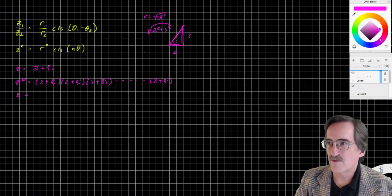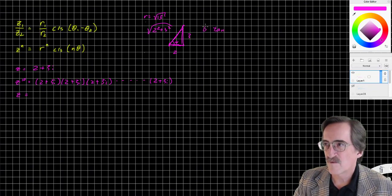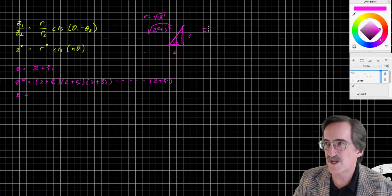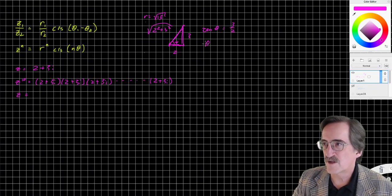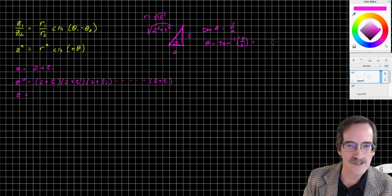And the angle, theta, is arctangent. Or actually, I prefer to start with this: tangent of the angle is 3 over 2. So theta is arctangent 3 halves. Now let's go ahead and get an answer here.